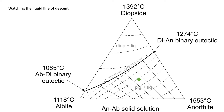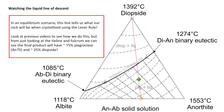Starting with an example system sitting in the plagioclase field, we know we're going to crystallize some form of plagioclase — but how do we work out what composition? We draw a line through diopside, our non-solid-solution component, through our current system, and where it intersects the line between albite and anorthite gives us the composition of the last plagioclase we will crystallize. In this case that is around 58% anorthite, 42% albite.